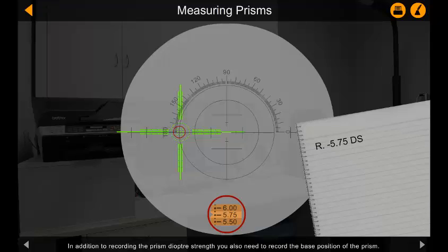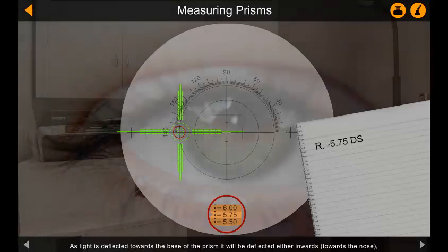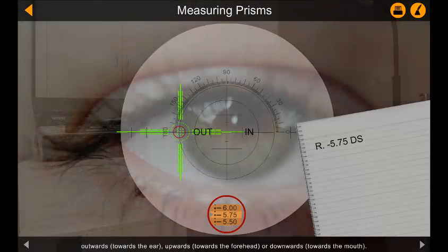In addition to recording the prism diopter strength, you also need to record the base position of the prism. As light is deflected towards the base of the prism, it will be deflected either inwards towards the nose, outwards towards the ear, upwards towards the forehead, or downwards towards the mouth.